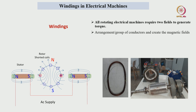First, we will see why we require electrical windings. All rotating electrical machines require two magnetic fields to generate a torque. Based upon the attractions and repulsions of these two magnetic fields, it will generate a torque, and this is the working principle for any type of electrical machine. To create these two magnetic fields, we require the windings.